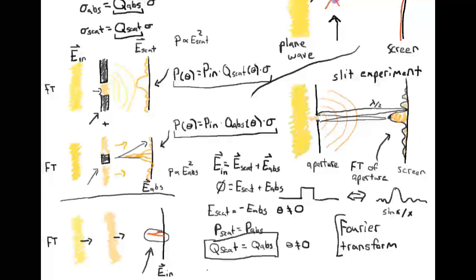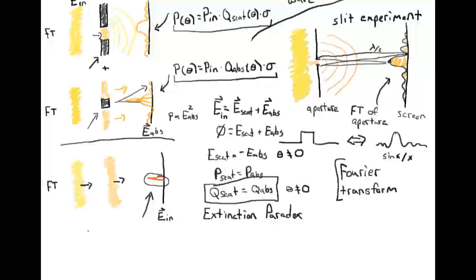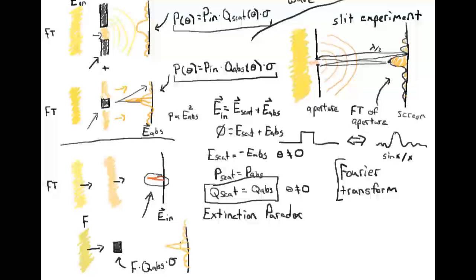While this might seem reasonable on the surface, it's actually quite strange — this is called the extinction paradox. If I have a source of light and put a perfect absorber in front of it with flux F, I directly absorbed F times Q_abs (which is 1) times the geometric cross-section. But we also know that some of the power diffracts around the object and scatters, so the power that's scattered is actually the same value as the power absorbed. The total extinction is actually 2 times the original geometric cross-section.